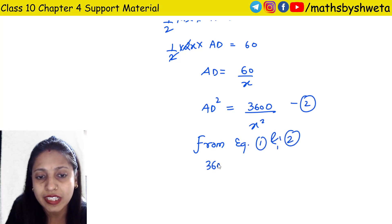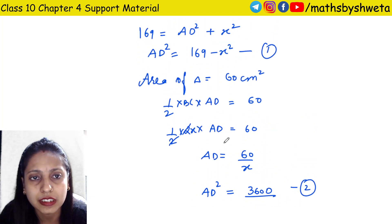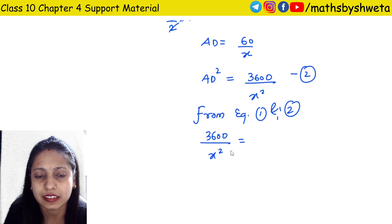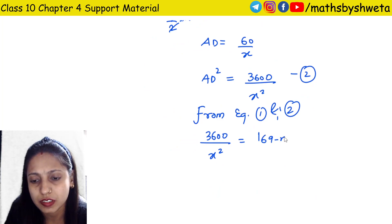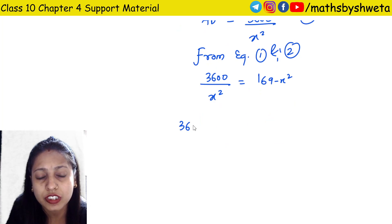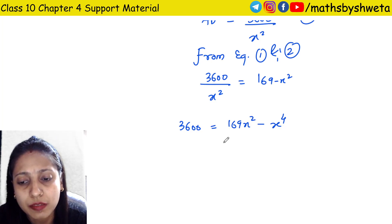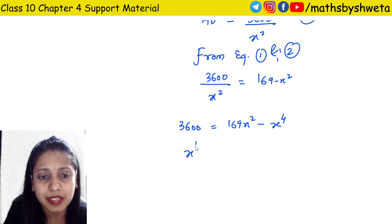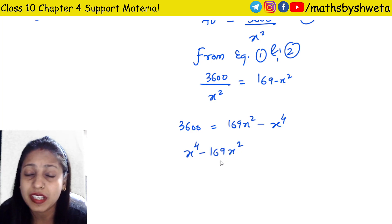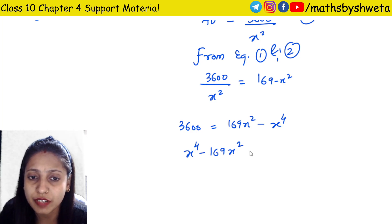From equations 1 and 2, both have AD square value, so I can equate both. 169 minus x square equals 3600 upon x square. Multiplying by x square: 169x square minus x to the fourth equals 3600.